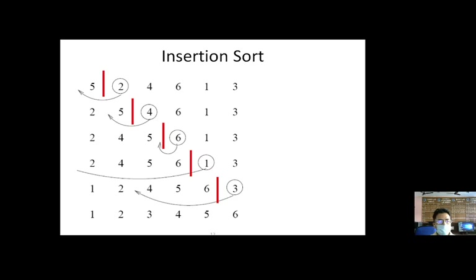An empty space is created and 1 is inserted at position 1. Finally, 3 is compared with 6 — 6 is greater so 6 shifts right; 5 is greater so 5 shifts right; 4 is greater so 4 shifts right, creating an empty space between 2 and 4, and we insert 3 there. In this way, insertion sort sorts the unsorted list and we get the sorted list: 1, 2, 3, 4, 5, 6.